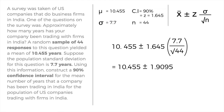Now let's substitute the values into the equation. X-bar is 10.455, plus or minus Z of 1.645, multiplied by the standard deviation of 7.7, all over the square root of N, which is the square root of 44.